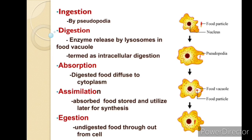For digestion — this is the process of breaking down food particles into a simple and soluble form. In amoeba, digestion is done with the help of enzymes released by lysosomes. This digestion takes place inside the cell, which is why amoeba shows intracellular digestion. For absorption — the digested food is absorbed by the cell into the cytoplasm by the process of diffusion.